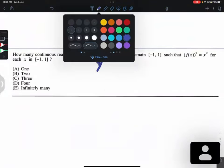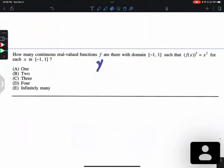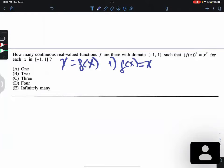We're gonna write y equals f of x. The first one I will do: if f of x equals x, then f of x squared equals x squared. And we have the first one.